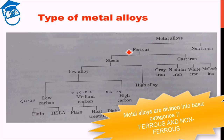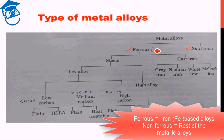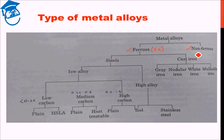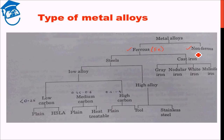Metal alloys are divided into two basic categories: ferrous alloys and non-ferrous alloys. Ferrous relates to iron-based alloys and non-ferrous covers the rest of the metallic alloys. Iron is one of the most predominantly used metallic systems, which is why we studied the iron-carbon phase diagram in detail. Iron is used in many applications and is also readily available in the Earth's crust.